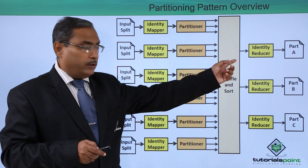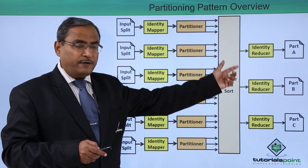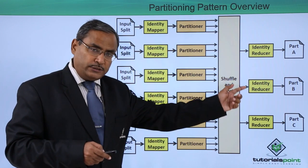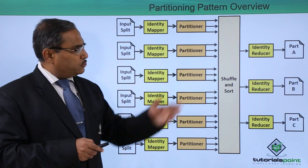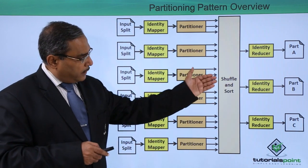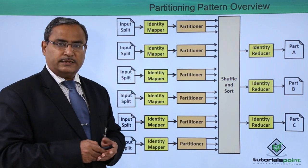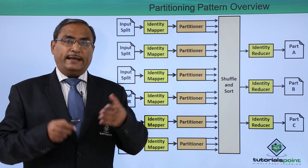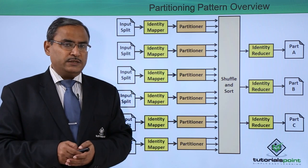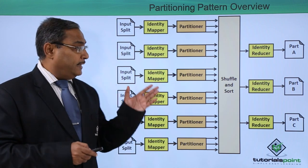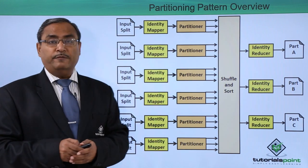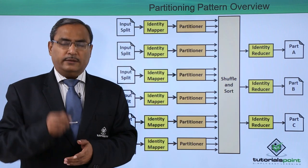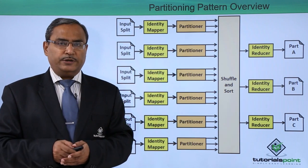The reducers — called identity reducers here — produce the required part files: part A, part B, and part C. In the next videos we will also be going through the implementation of this concept. In this video we have given you one overview of this concept. Thanks for watching.